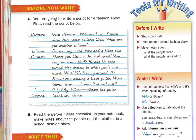Here's the script. Good morning. Welcome to our fashion show. Here comes Liliana Cruz. What are you wearing, Liliana? I'm wearing a red dress and a black cape. Thank you, Liliana. You look great. Now, everyone, who's that? He has his back turned. He's dressed in white pants and a jacket. Wait, he's turning around. It's Samir. He's holding a black guitar. Wow, Samir. How much does that suit cost? Only $50 without the guitar. Thank you, Samir.